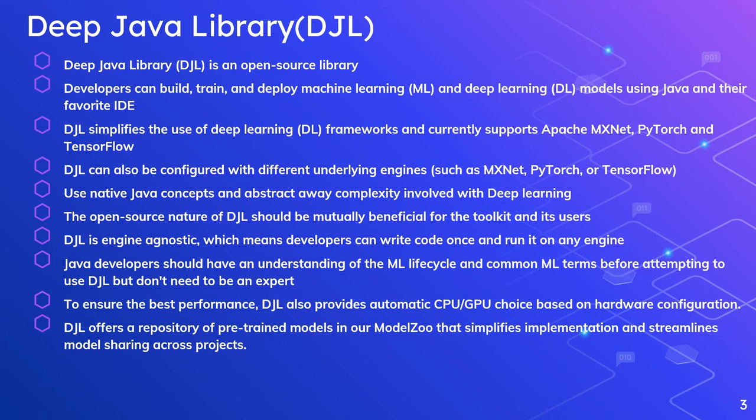The open source nature of DJL is mutually beneficial for the toolkit and its users, with lots of improvements coming from open source forums. DJL is engine-agnostic, meaning developers can write code once and run it on any engine — similar to Java's write-once-run-anywhere philosophy. Java developers should have a basic understanding of the ML lifecycle before using DJL, but they don't need to be experts in machine learning.